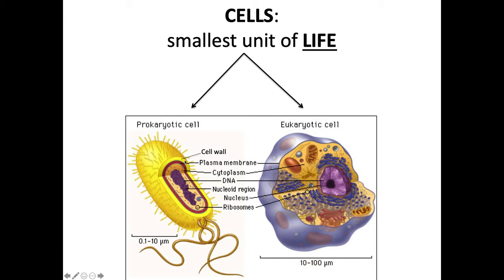Know the differences between prokaryotic and eukaryotic cells. The similarities are that they both have DNA, they both have ribosomes, they both have cytoplasm, and they both have a plasma membrane. All cells will have these four structures in common. When comparing and contrasting, I always like to make a chart — use this approach so you can remember it better.